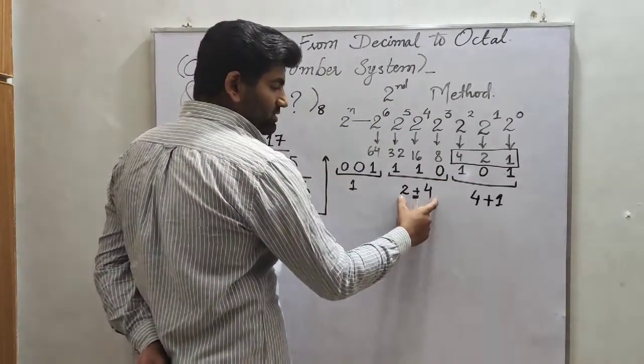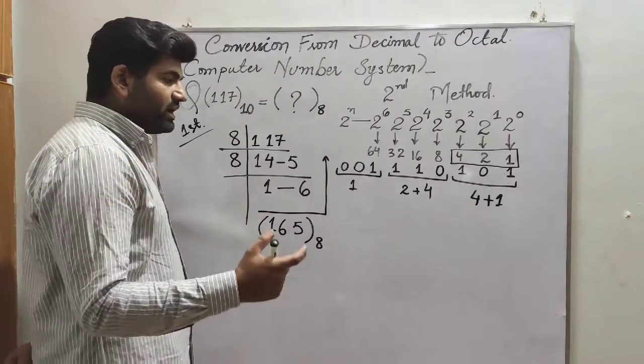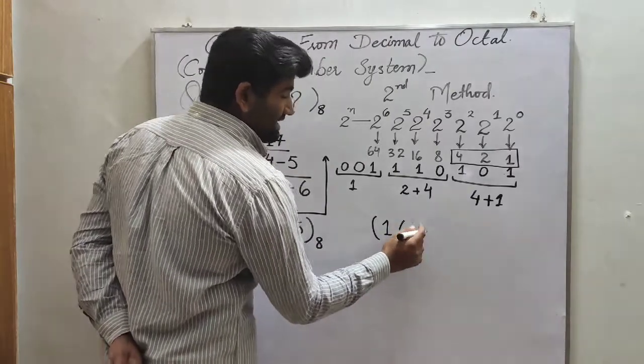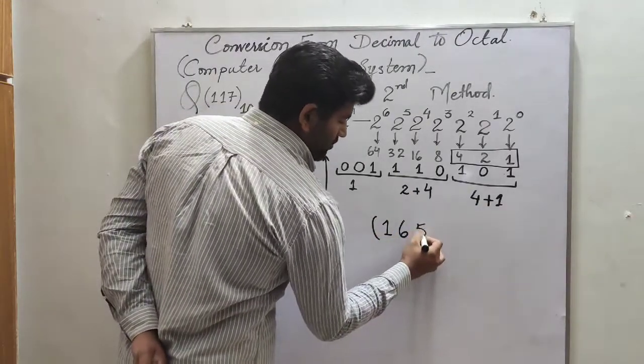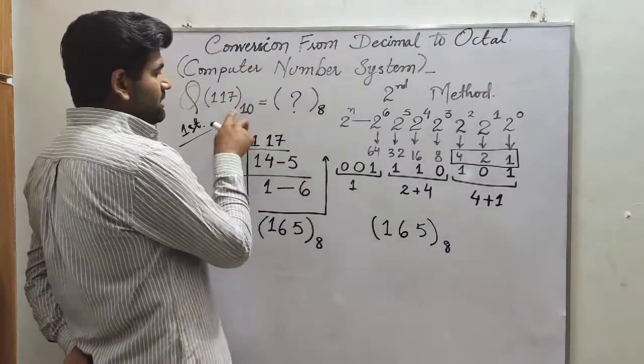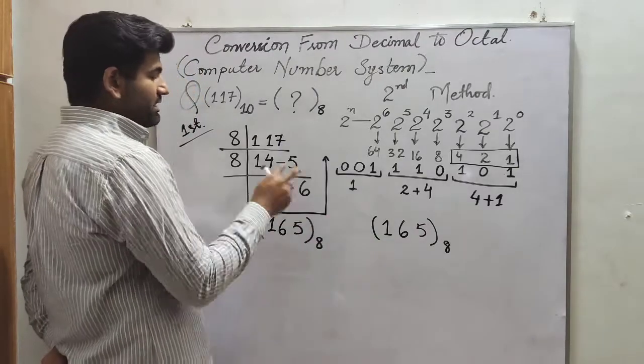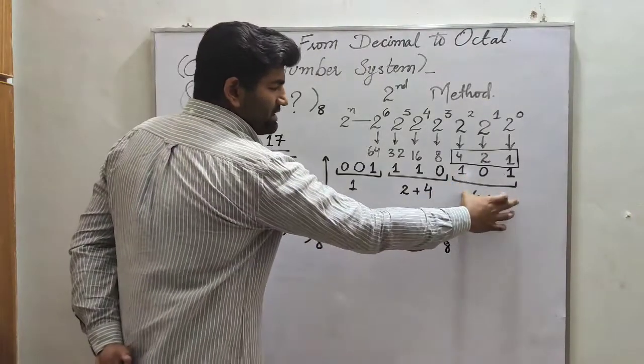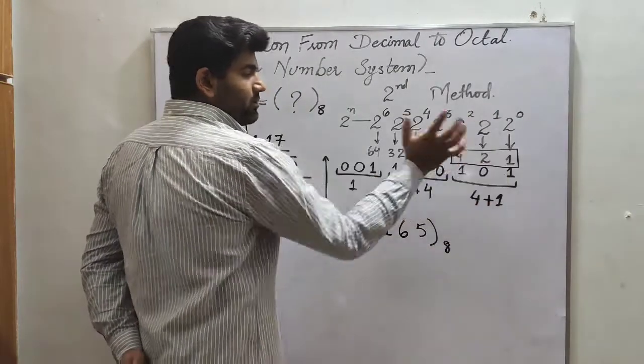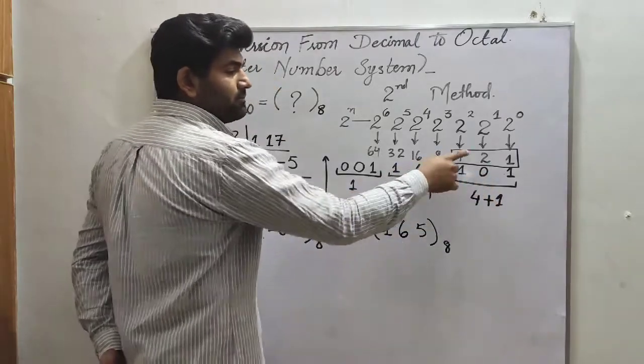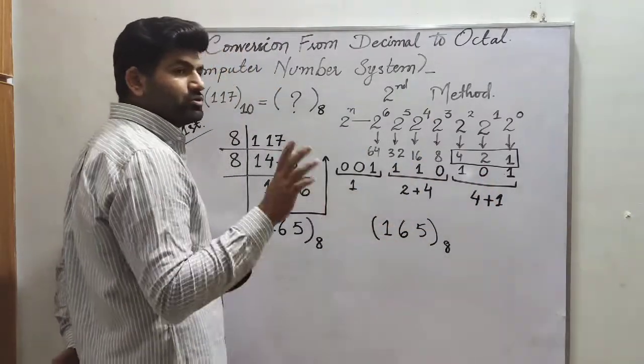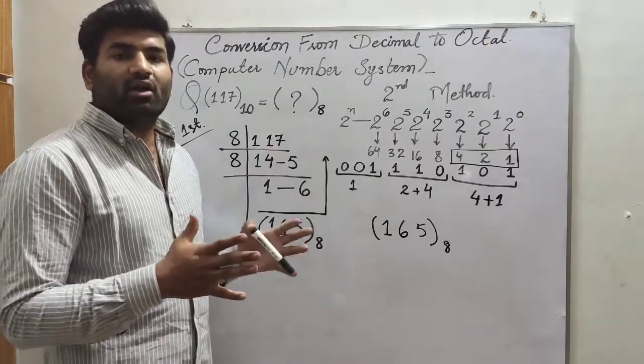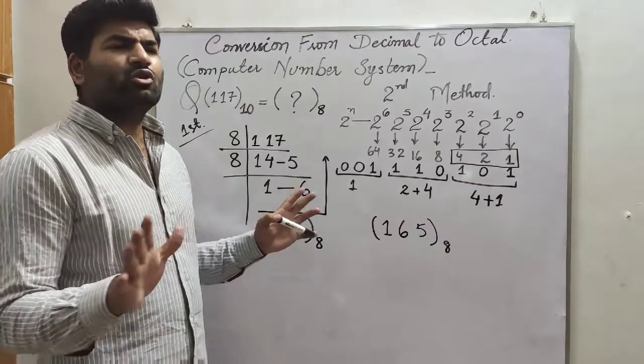So this is the code basically. The first element of the code, the second element of the code, and the third element of the code. It was very easy, very understandable basically. So the first element will be 1, the second one will be 2 plus 4 which is 6, and the third one will be 4 plus 1 which is 5.